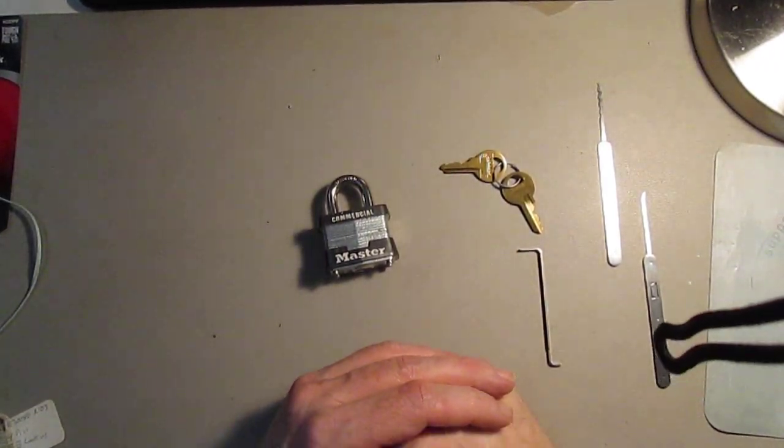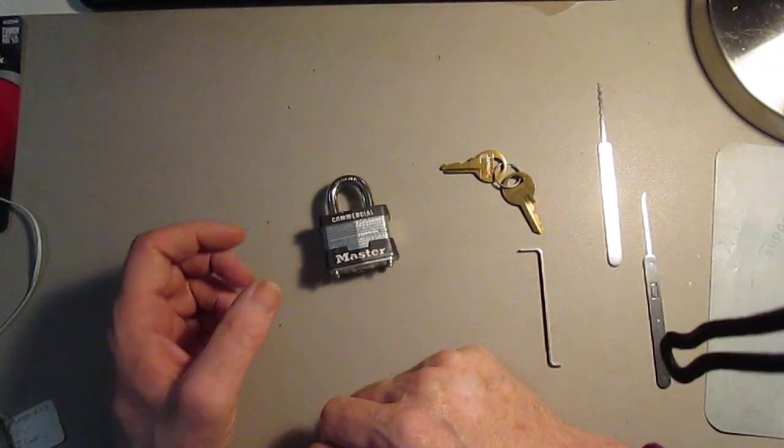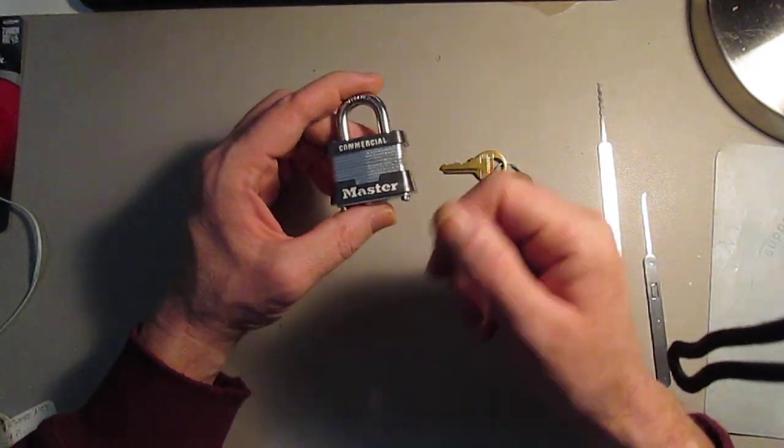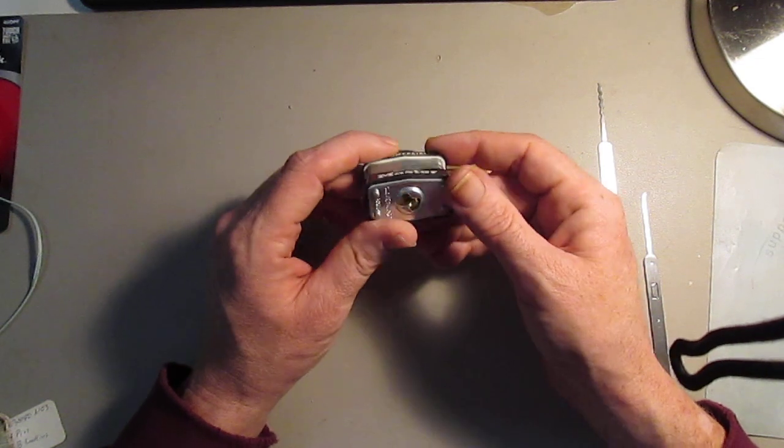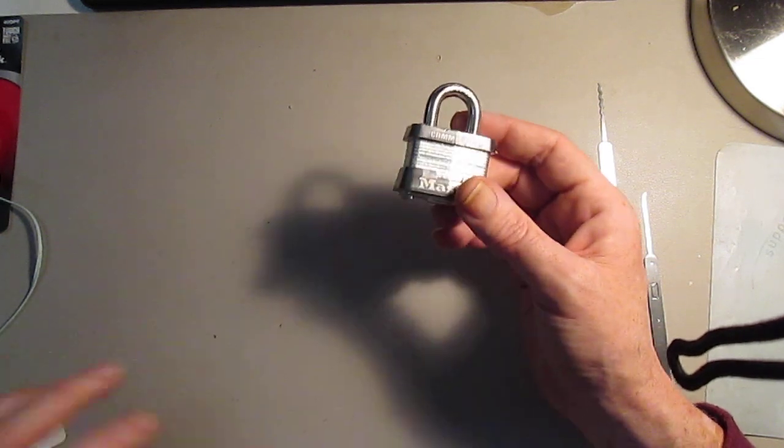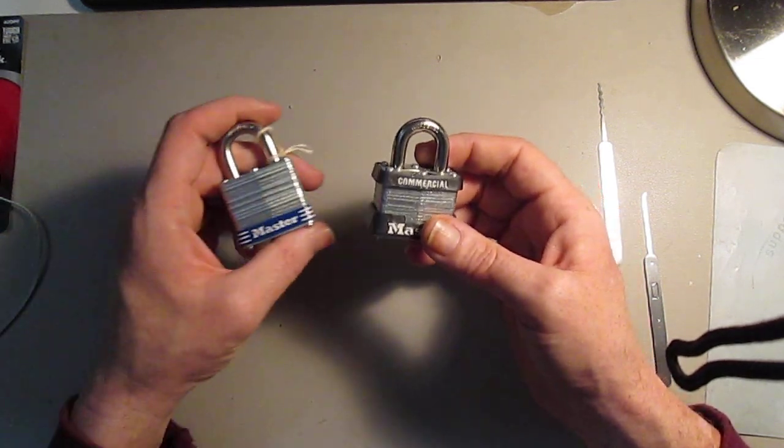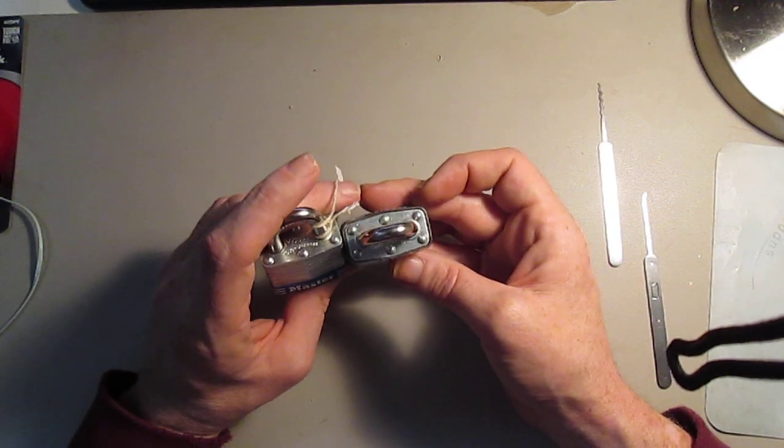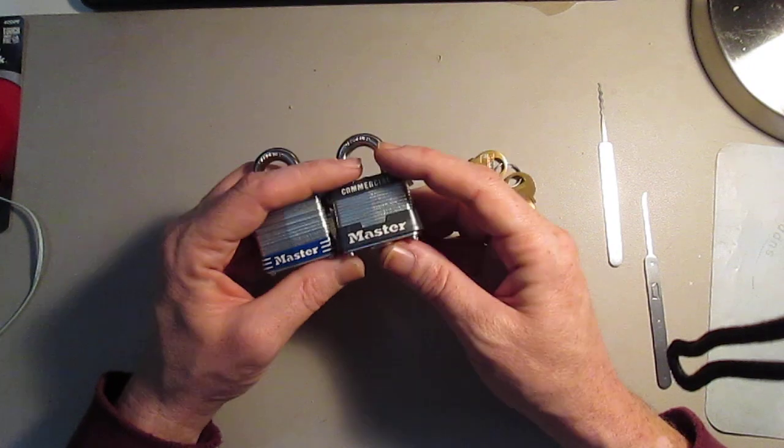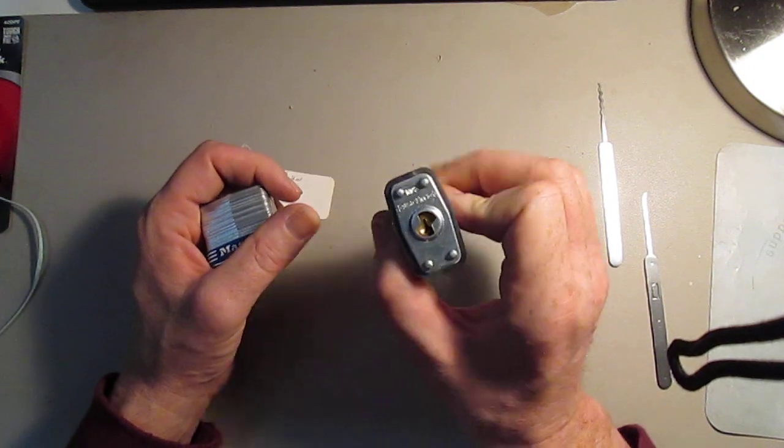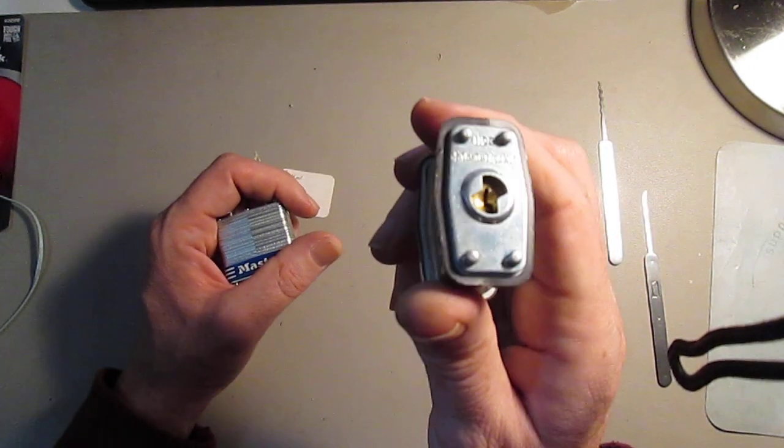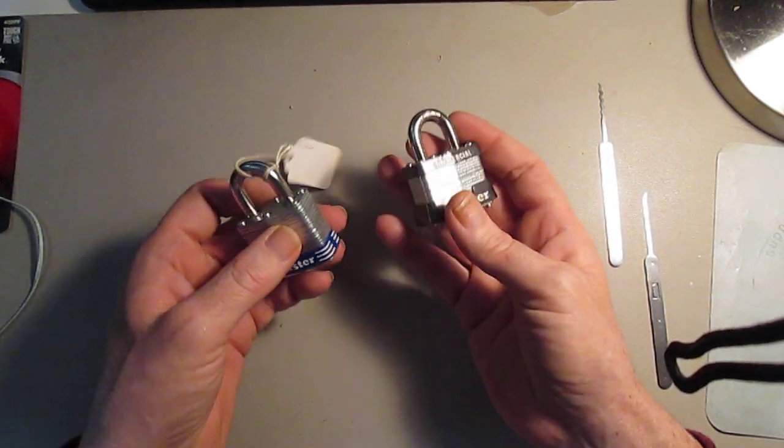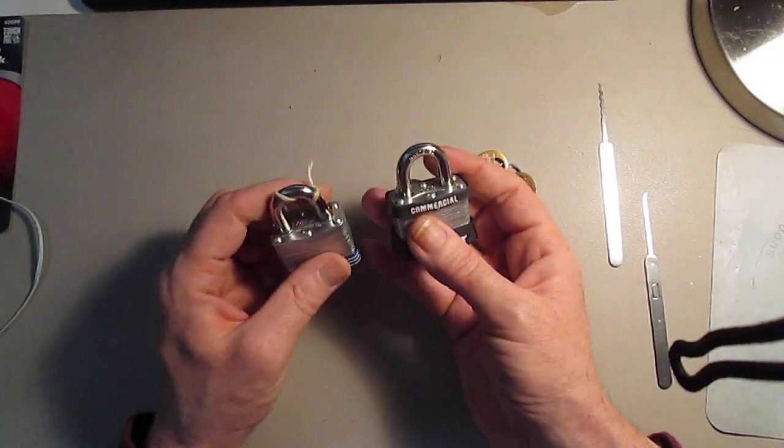Hey everyone, welcome back. In this video I have a Master Lock commercial. I'm not sure what the difference is between this lock and Master Lock number three, really other than the bumper. It even says number three right there on it. The weights are pretty much identical.